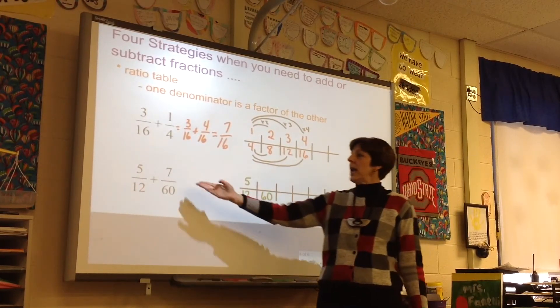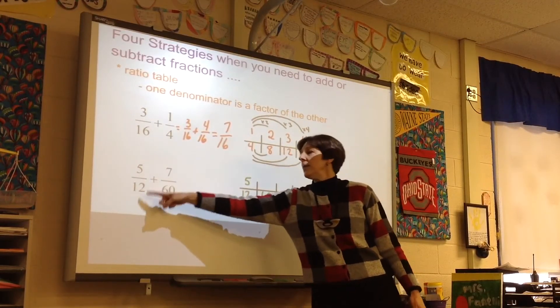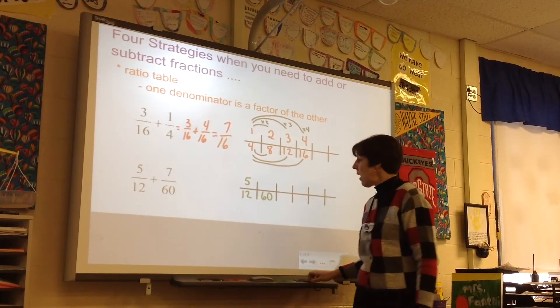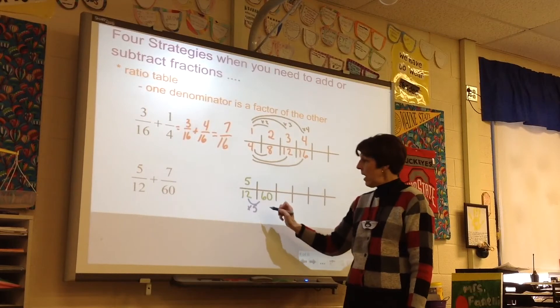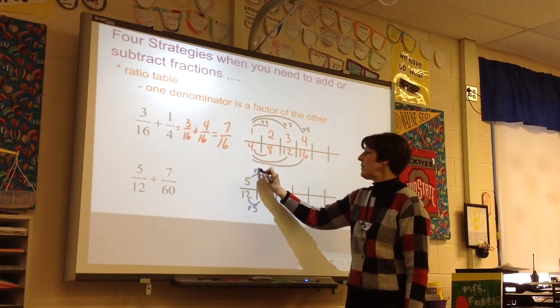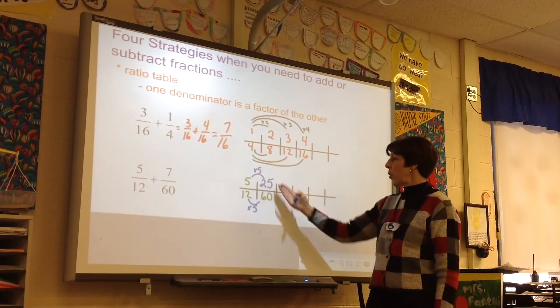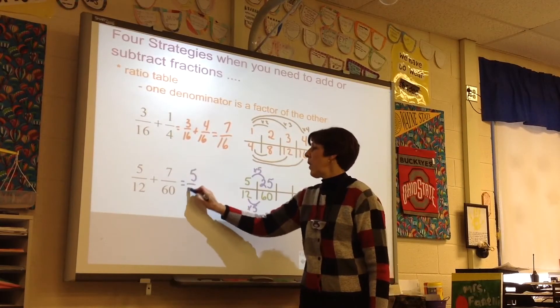Another example, if they didn't like the clock for the twelfths and the sixteenths, and they understand that 12 is a factor of 60, would be to change the 5 twelfths. If they're aware that 12 times 5 would give us 60, then they know that they have to do 5 times 5 would be 25 for 25 sixtieths. So 5 twelfths,